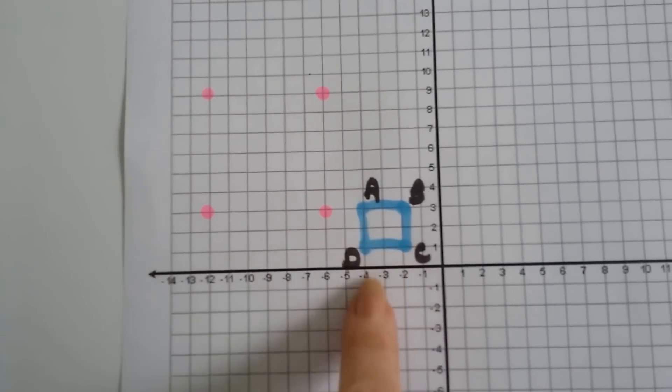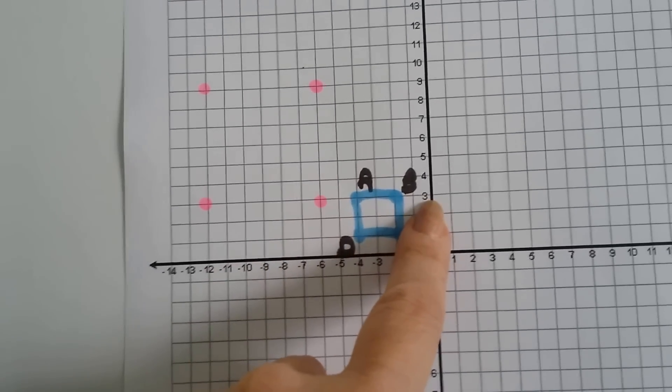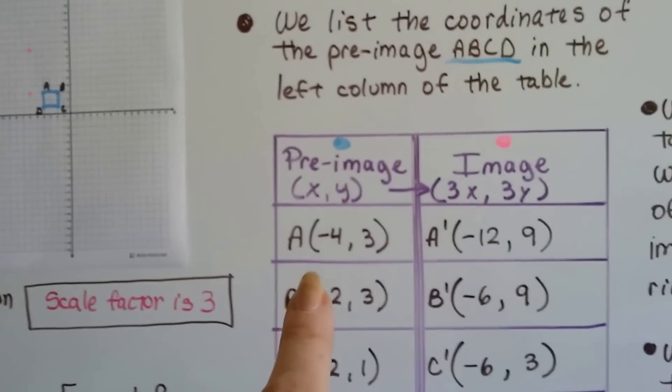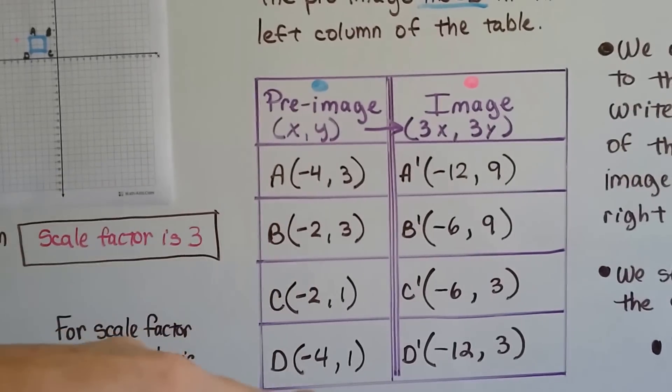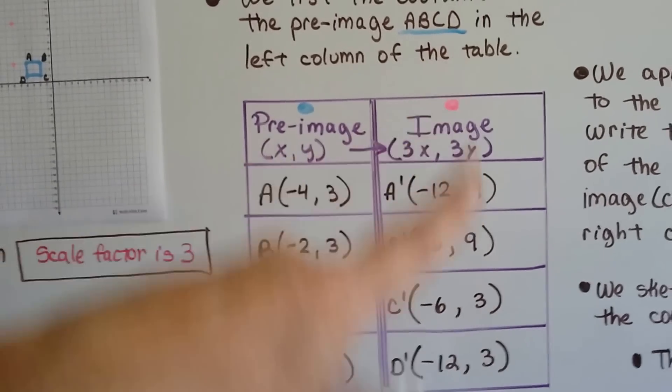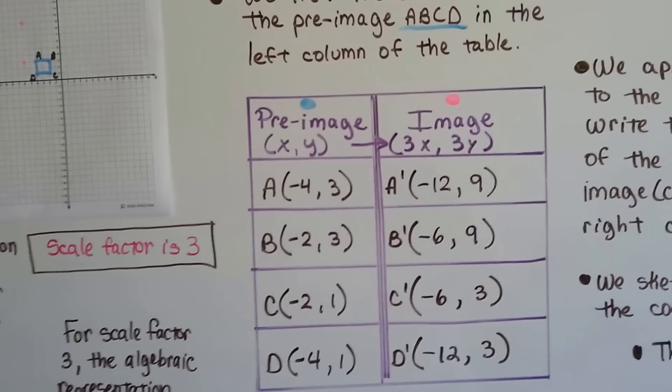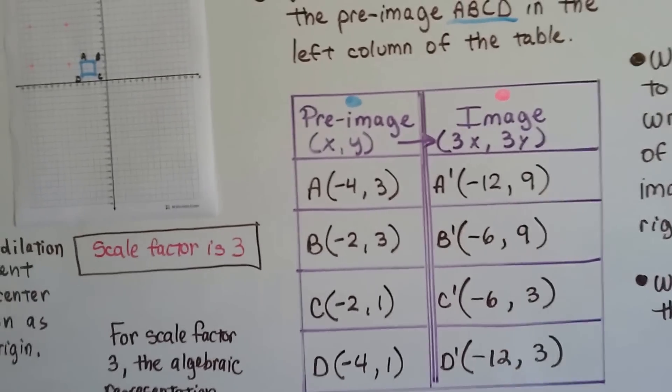A is at negative 4, 3, and what we can do is list the coordinates of the pre-image, a, b, c, d, in the left column of a table to organize it, and then we can put the image in the right-hand column. Then we can just list all our coordinates for a, b, c, d, and multiply them by that 3.